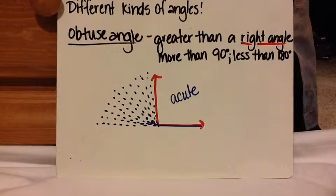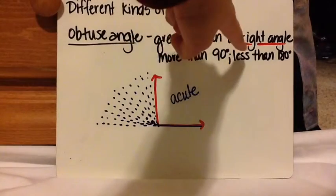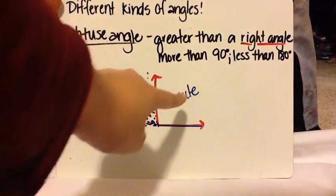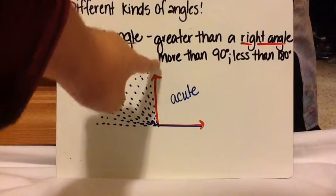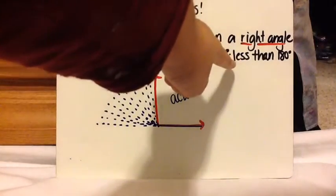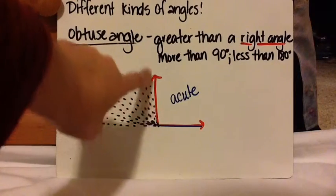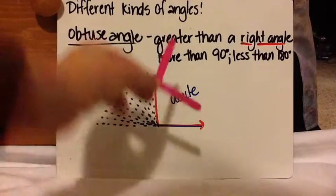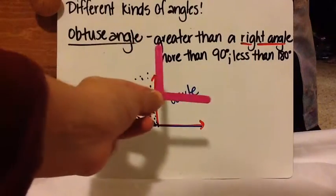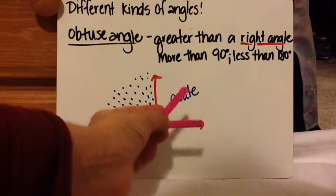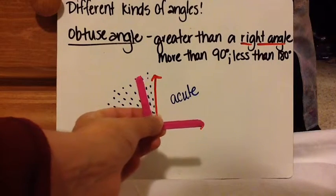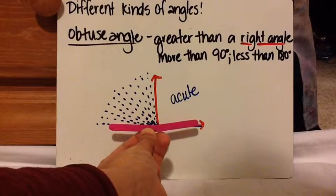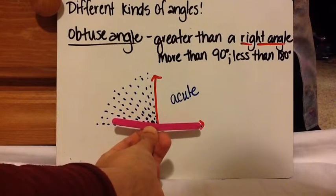The next one is an obtuse angle. An obtuse angle is greater than a right angle. If an acute angle is less than 90 degrees, obtuse is greater than a right angle, so it's more than 90 degrees. But it's going to be less than 180, which I'll talk about in the next video. Here are all the possibilities for an obtuse angle — and that's probably as far as an obtuse angle goes. It can't be completely flat-lined; that's actually a different kind of angle.